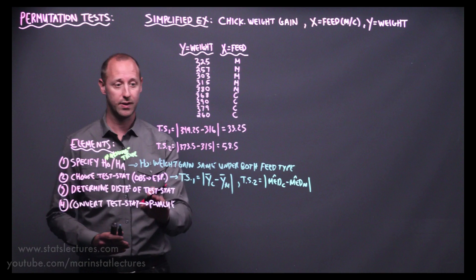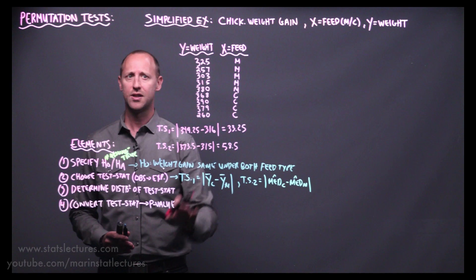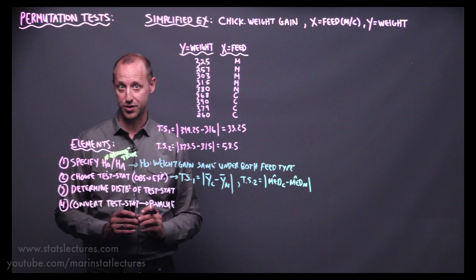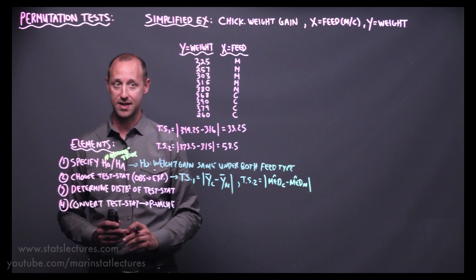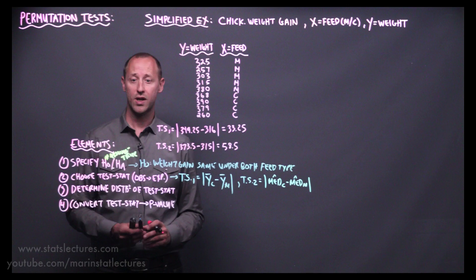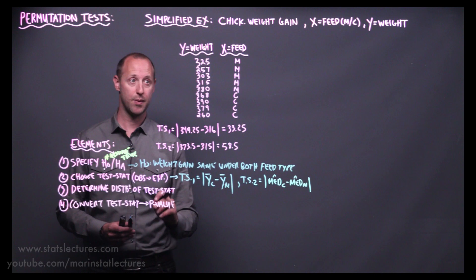If our null hypothesis is true — if the weight under these two feed types is the same — we'd expect these test statistics to come out to be roughly zero. The mean should be the same, the median should be about the same. They're not going to be exactly zero in a sample; they'll drift, hopefully close to zero if the null is true. So we want to know how much evidence these estimates provide against the null — what's the probability of getting test statistics this large or larger if the null is true? We'll build up to this p-value using a permutation testing approach.